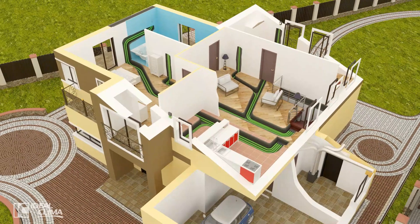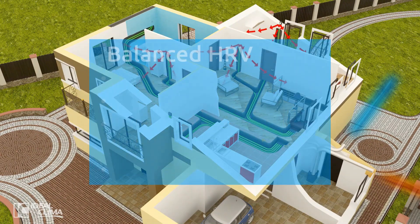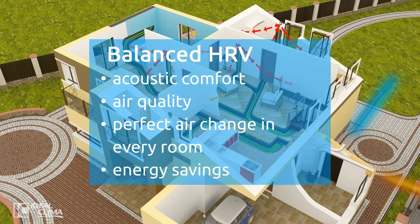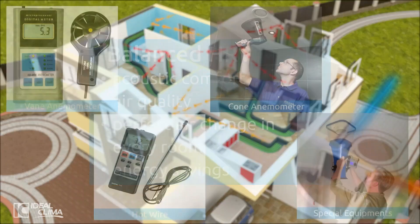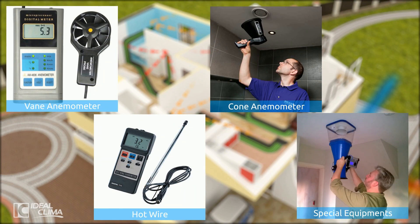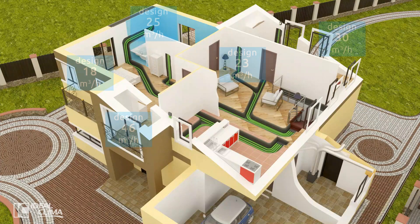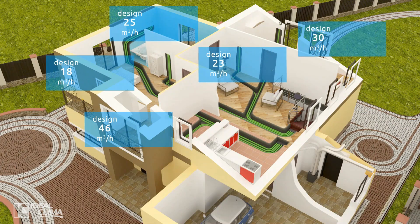Balancing the system means more comfort and more savings, which is why it's mandatory by norm. The traditional process requires costly instruments and is long and tiresome because at least three rounds of measurements are required to achieve the correct air flows.